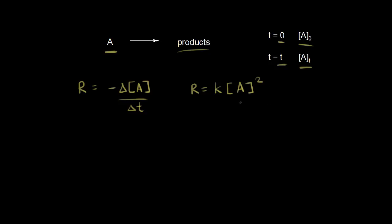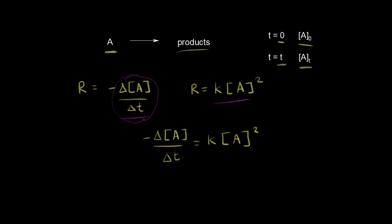Now we can set these two rates equal. We have the negative change in the concentration of A over the change in time, and that's equal to the rate constant K times the concentration of A squared. Next we need to think about our calculus. Instead of expressing this as an average rate, we can think about the instantaneous rate — the rate of change of the concentration of A with respect to time. So we write negative d[A]/dt equal to K[A] squared. And we have our differential equation.